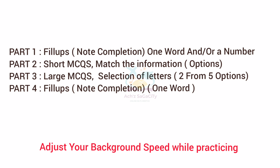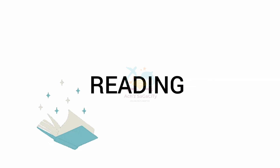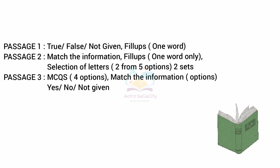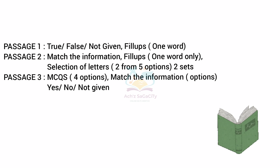Now we'll see the reading module for academic first. In Passage 1, you will get True/False/Not Given type questions — write them in complete form, don't write T, F, NG. Also a fill-up type question — a short note completion, one word only — and along with that, a selection-of-letter type question. Passage 1 will be easy to moderate level.